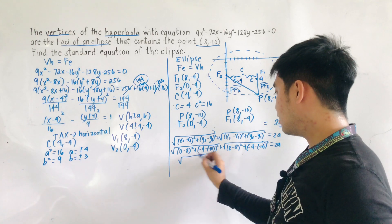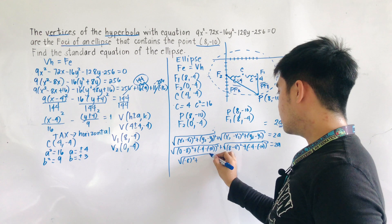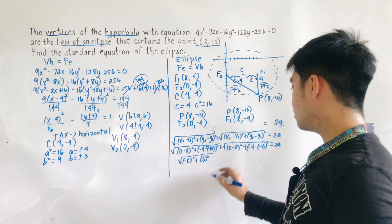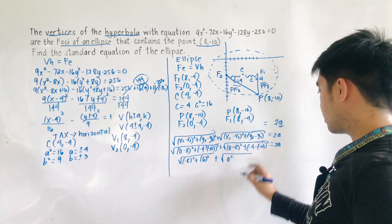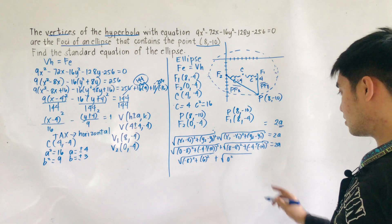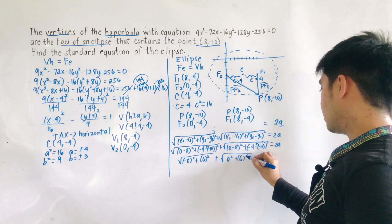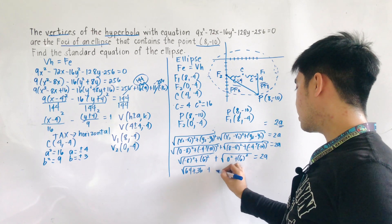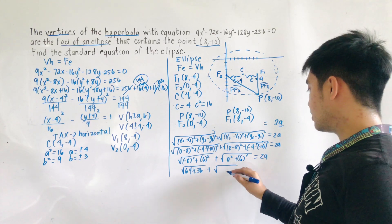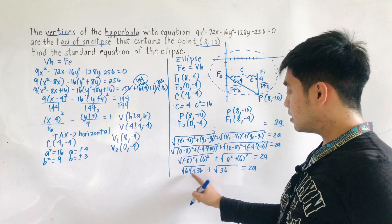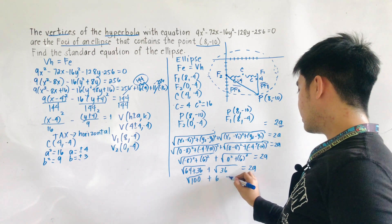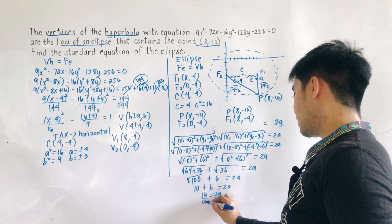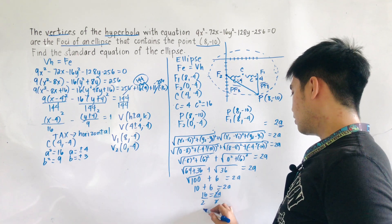Simplifying: (0 minus 8) is negative 8 squared, and (negative 4 plus 10) is 6 squared. For the second term, (8 minus 8) is 0 squared, and (negative 4 plus 10) is 6 squared. So we get √(64 plus 36) plus √(0 plus 36) equals 2a, which is √100 plus √36 equals 2a, giving 10 plus 6 equals 2a, so 16 equals 2a. Dividing both sides by 2, a equals 8.